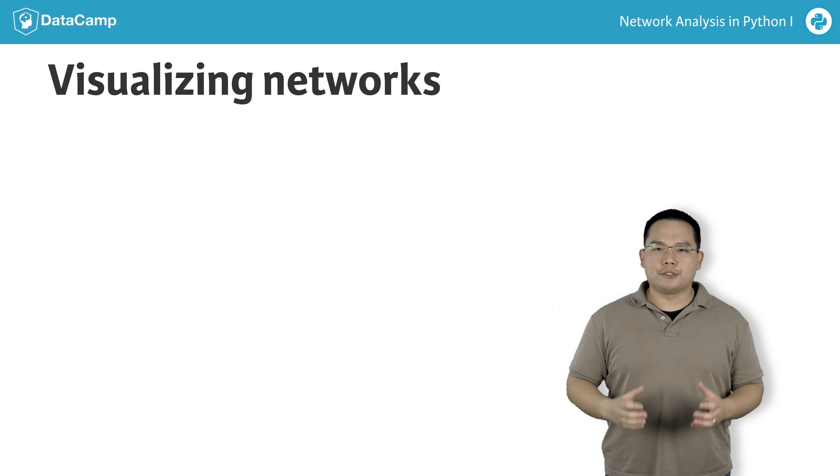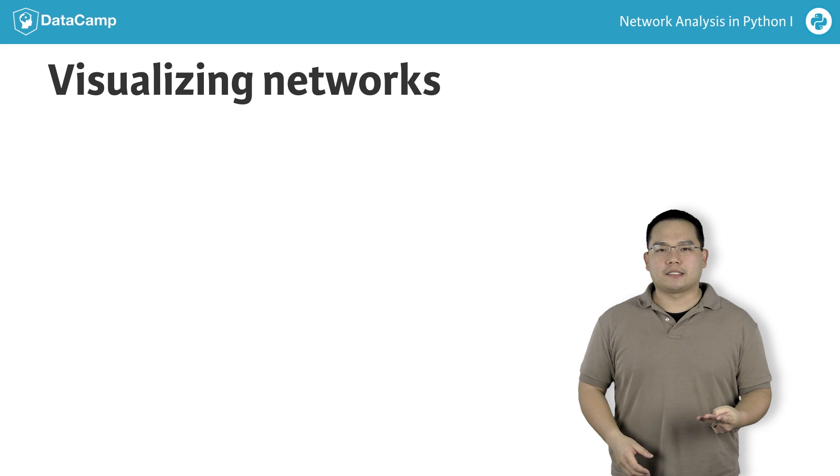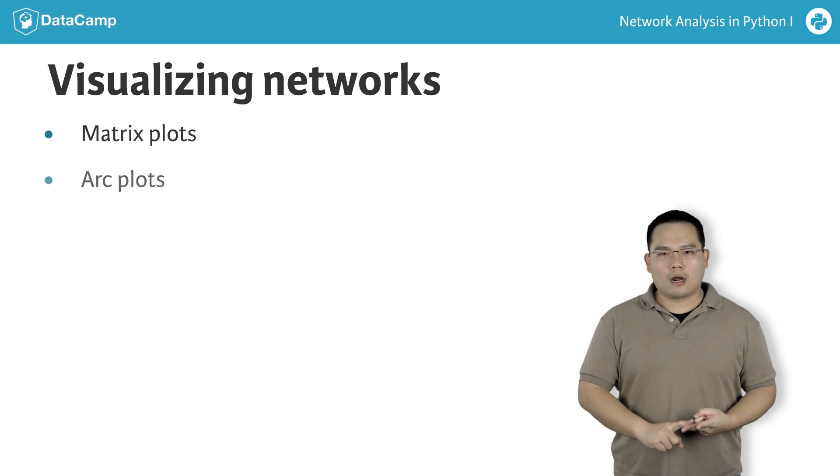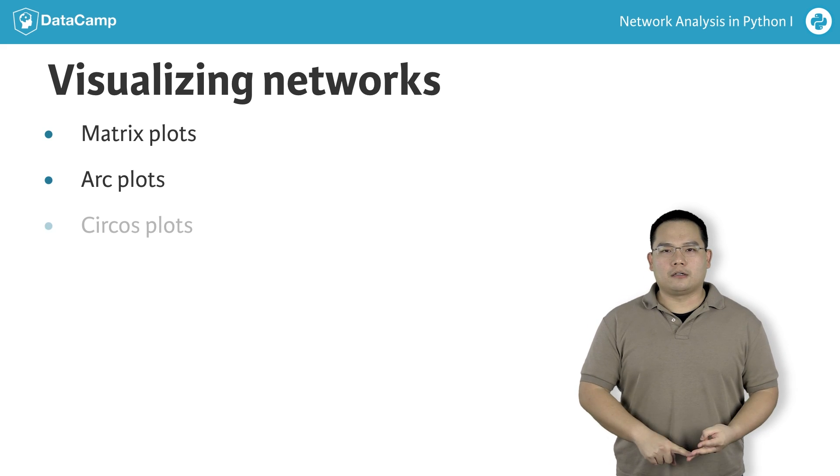I'm going to introduce you to three different types of network visualizations. The first is visualizing a network using a matrix plot. The second is what we call an arc plot, and the third is called a Circos plot.